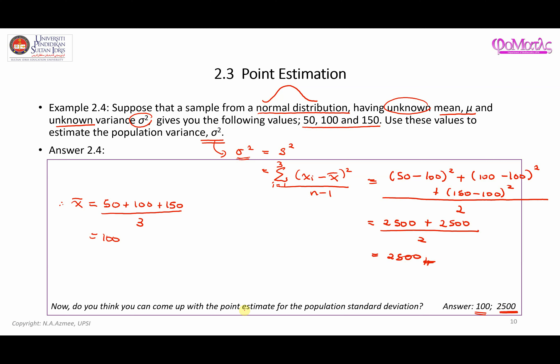Do you think you can come up with a point estimate for the population standard deviation, which is sigma? So what is the value for sigma? Well, based on the previous video, we have seen that sigma is equal to s, and this is equal to having the square root of s squared. And this is equal to, we know s squared is 2,500. So square root of 2,500, and that is equal to 50.